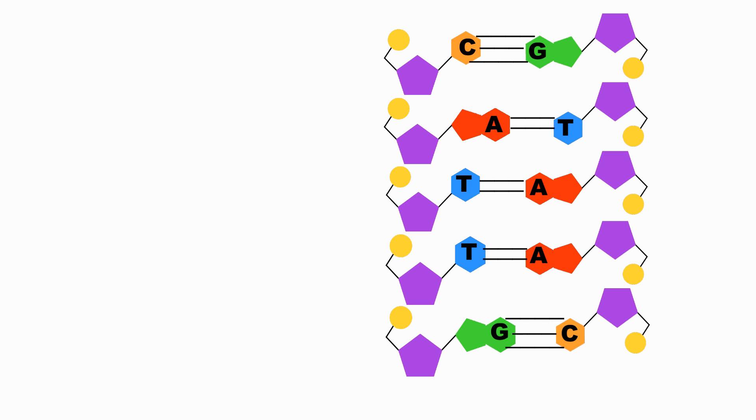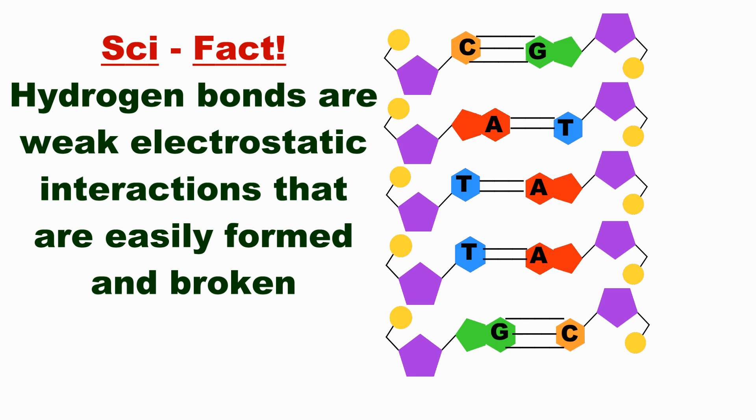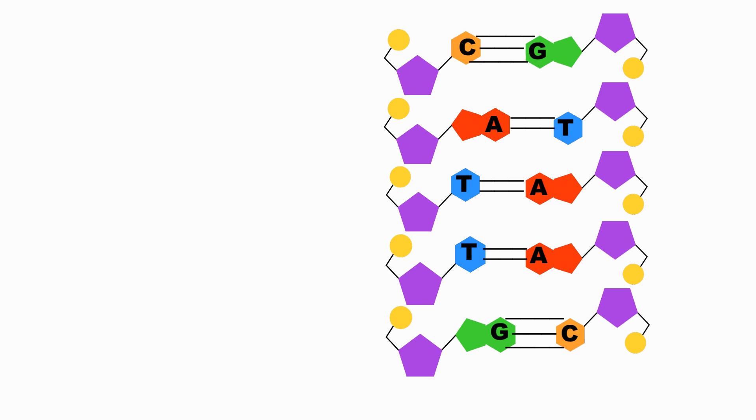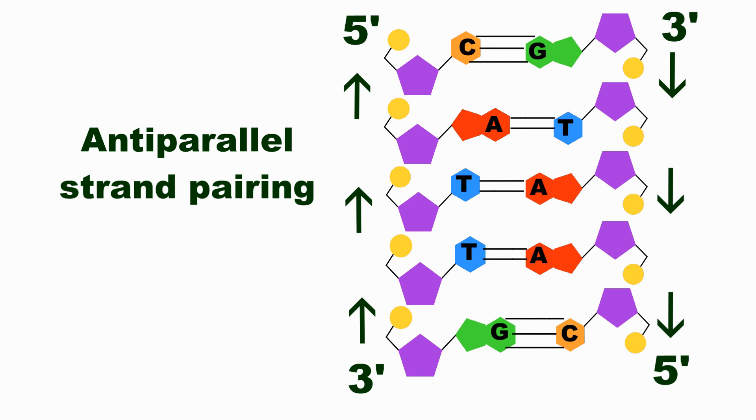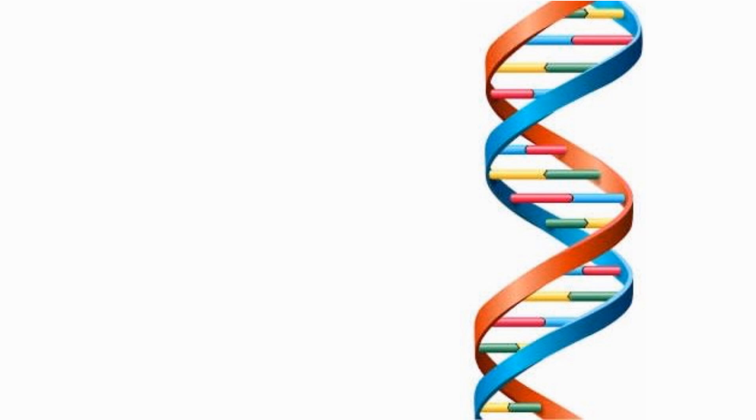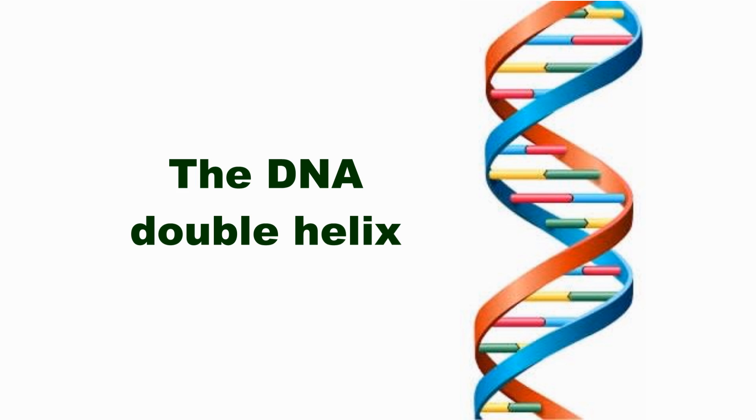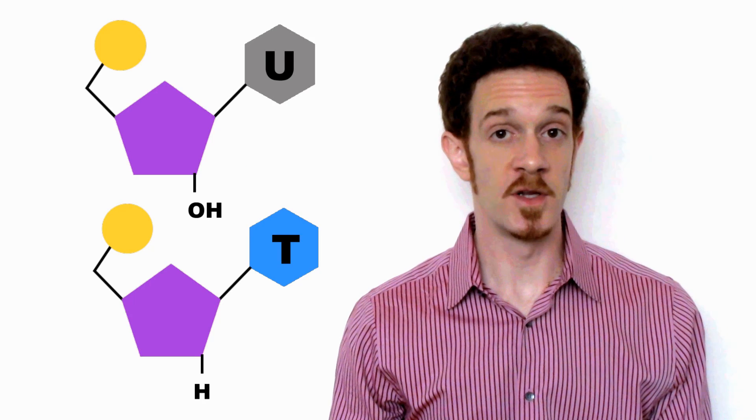Hydrogen bonds are then formed between each pair of bases, two for AT pairs and three for GC pairs. These bonds ultimately hold the two strands together. Since the nitrogenous bases of both strands need to face each other, the strands also have to run an opposite or anti-parallel orientation. In total, these interactions produce a right-handed twisting molecule of two polymers that we call a DNA double helix.